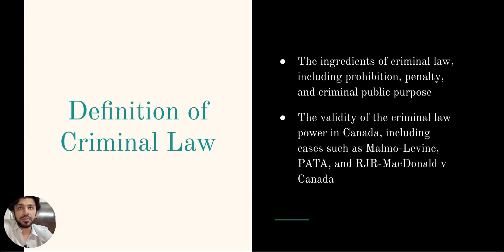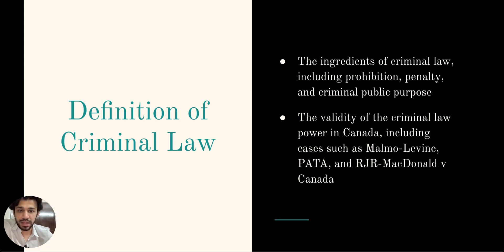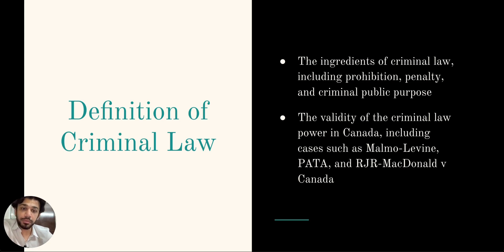Moving on to the definition of criminal law. The definition of criminal law includes three important ingredients. The first ingredient is there should be a prohibition — a specific act or behavior that is prohibited by law. Second, there is a penalty — a punishment or consequence for breaking that prohibition.